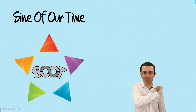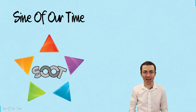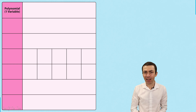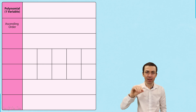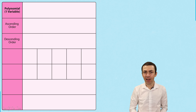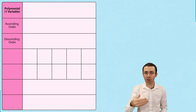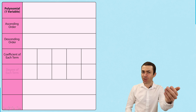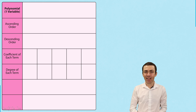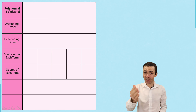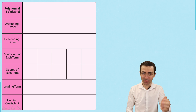Hello everyone and welcome to Sign of Our Time. My name is Bruce and today we are going to cover several aspects of polynomials, including how to write a polynomial in ascending order, descending order, how to get the coefficient of each term, the degree of each term, and finally how to get the leading term as well as the leading coefficient.